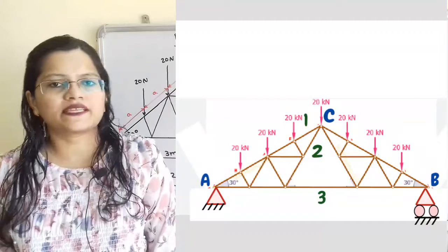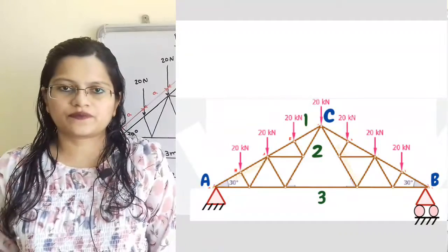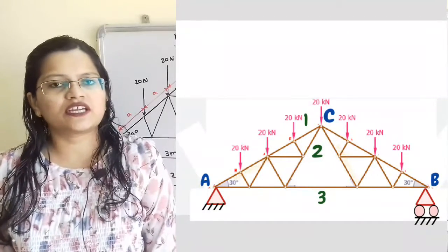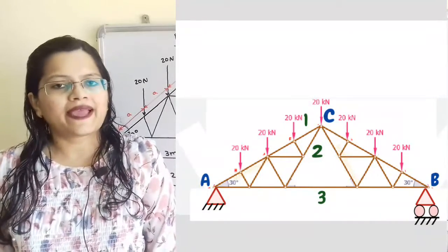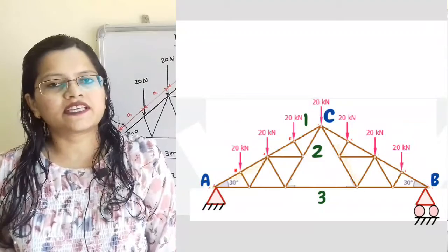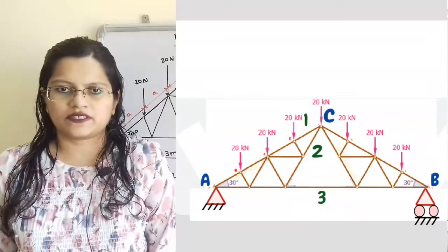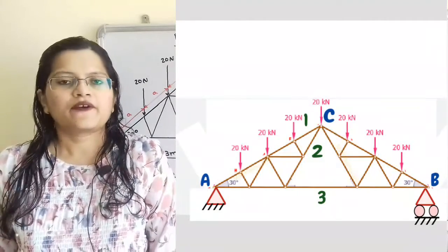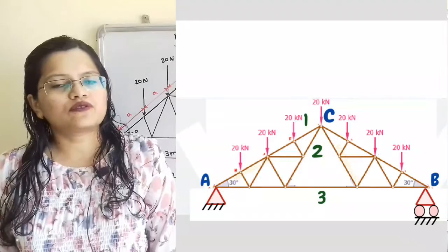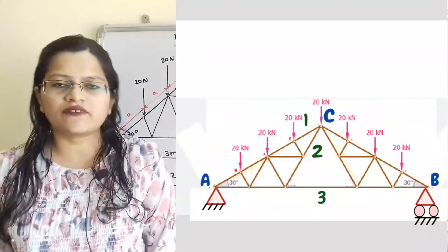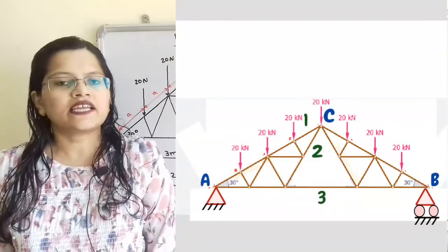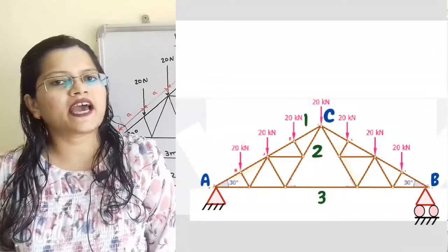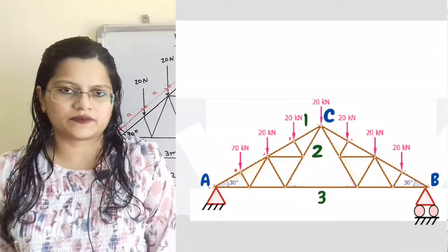There are some basic rules. We can pass through a section line through a maximum of 3 members, but not more than that. We have to draw the section line in such a way that it will separate the entire truss into two parts.